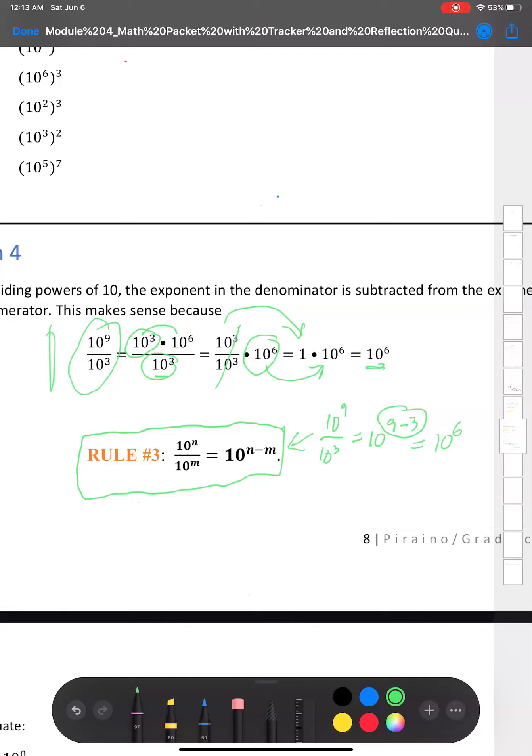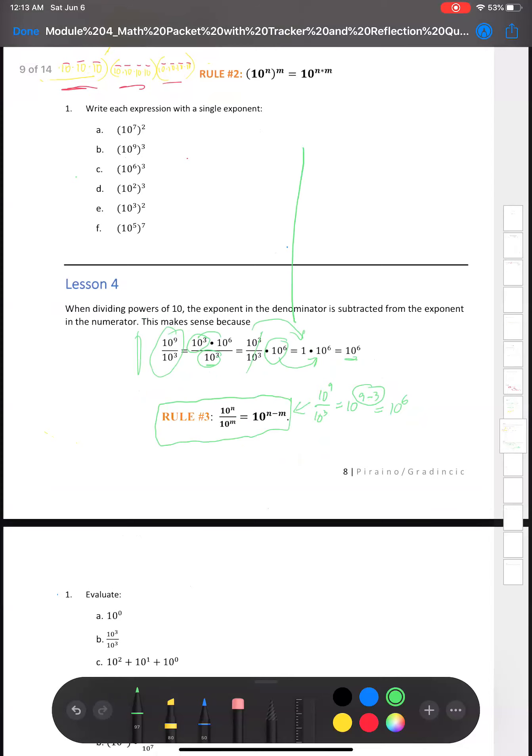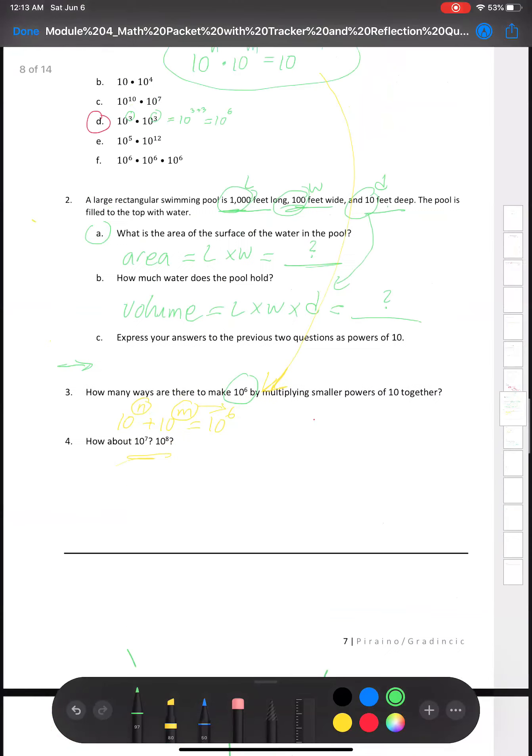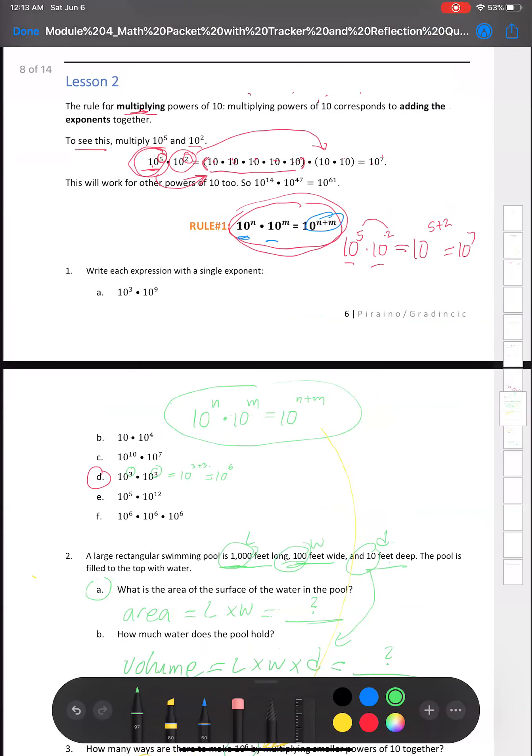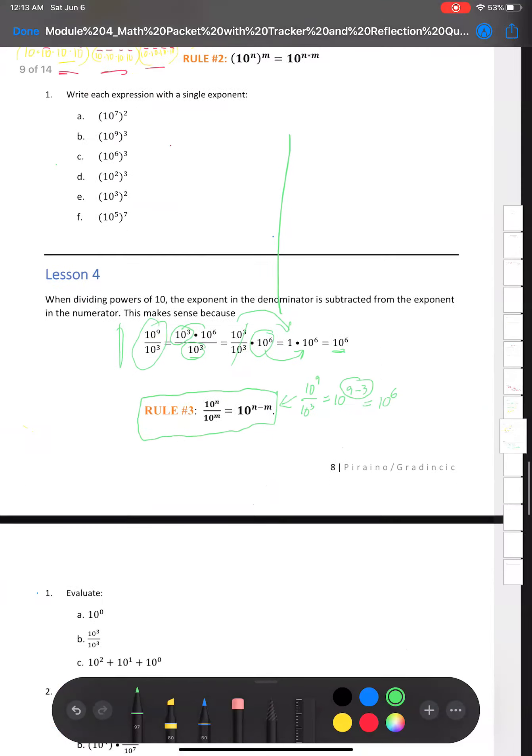Now before we move on, let me show you how this rule, rule number three, kind of incorporates rule number one that we learned earlier. So let's refer back to our rule number one. Rule number one says when you're multiplying two powers of 10, you're going to just add the exponents, right?